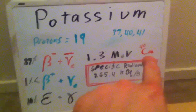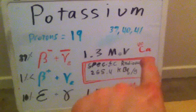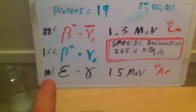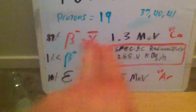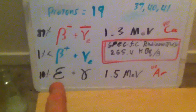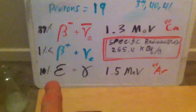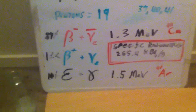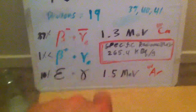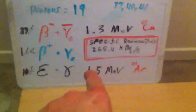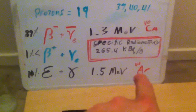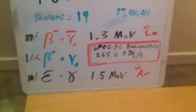Electron capture occurs about 10% of the time — keeping in mind that 89% of the time, give or take, you get an electron emission. When you capture an electron, the nucleus becomes unstable and must release a gamma particle at about 1.5 million electron volts. That decay produces an argon-40 atom.